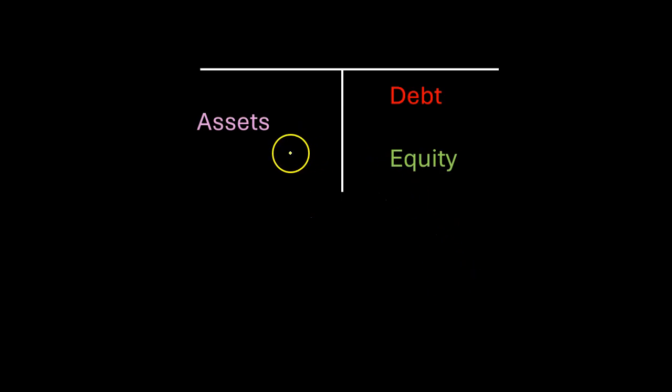All right, first, what is capital structure? Well, that's actually easy. If you take a look at the balance sheet, this is a typical balance sheet structure. On the left-hand side, you have assets. Assets represent where all the money is going. And if money is going somewhere, then it's coming from somewhere, which represents the right-hand side of the balance sheet. Money mostly comes in two ways, either debt or equity. The right-hand side of the balance sheet essentially represents capital structure.